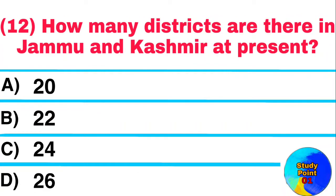Question: How many districts are there in Jammu and Kashmir at present? Answer: 20.